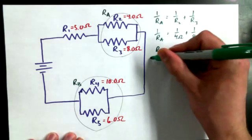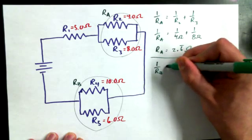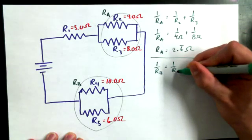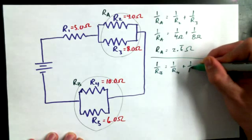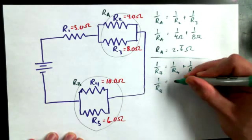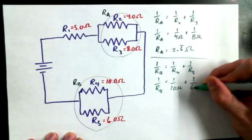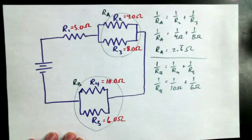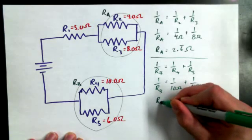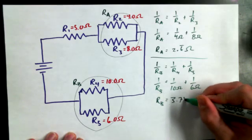For RB, we'd say 1 over RB is equal to 1 over R4 plus 1 over R5. Sub in our values, 1 over RB is 1 over 10 ohms plus 1 over 6 ohms, and then we invert both sides, and once you've inverted it, what do you find the resistance for junction B to be equal to? Megan? 3.75 ohms.